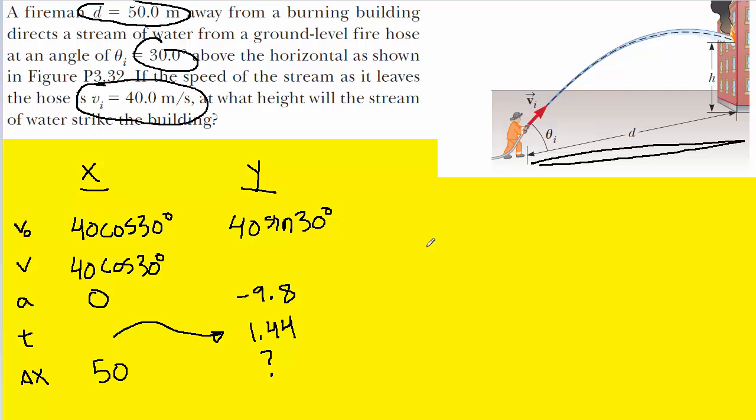To do that, we can use the following kinematics equation. It's actually the same one that we used before for the x direction. Note that in this case, instead of calling the displacement delta x, I've used delta y just to indicate that we're actually calculating a displacement in the vertical or y direction. So we can go ahead and plug in the known values from the y direction.